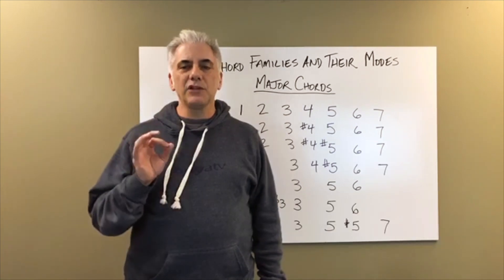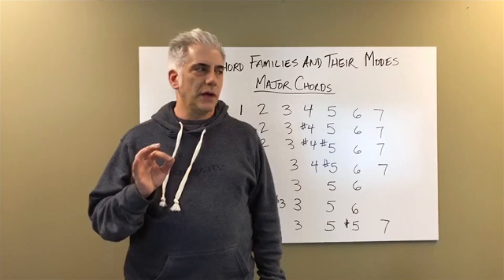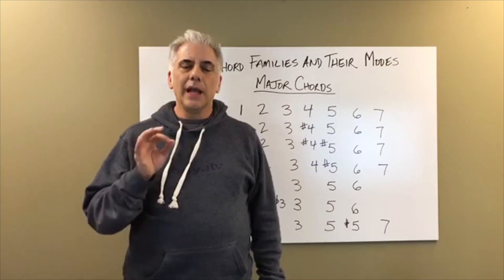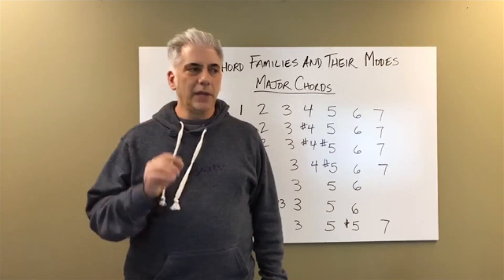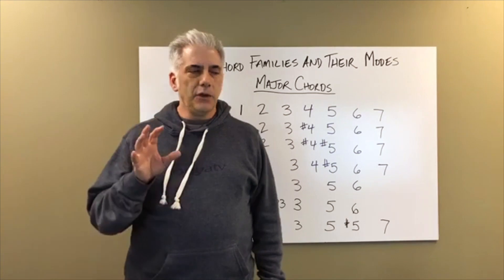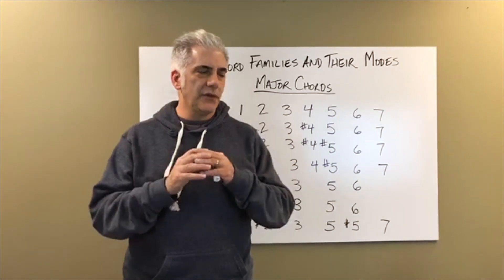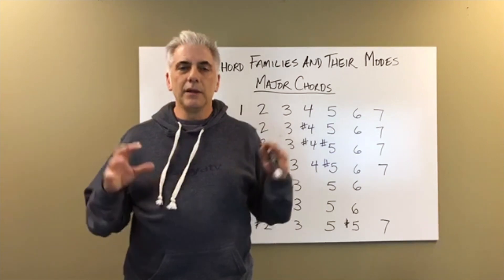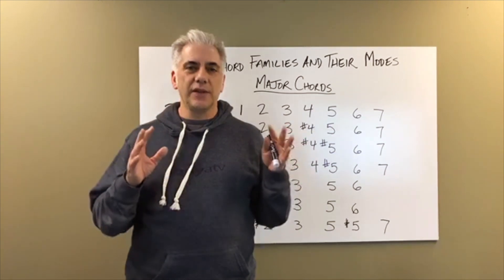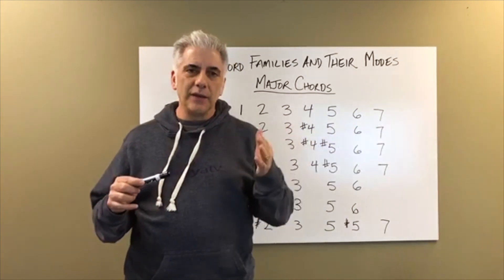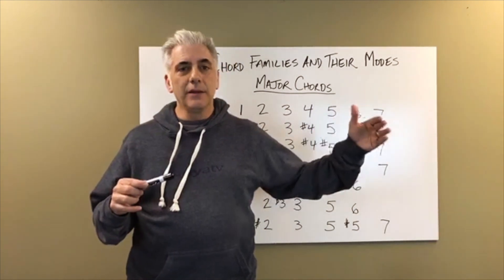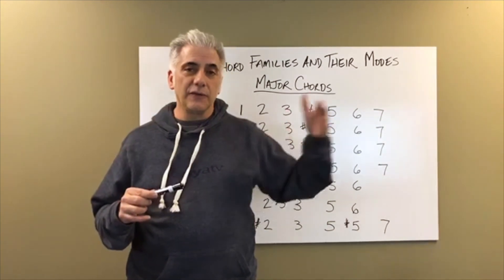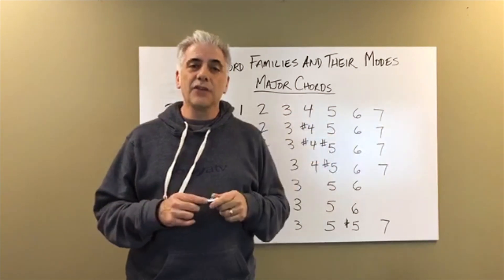I touch upon it during each video, but this is really going to get down to real specifics on what gives a mode its sound and how do you use them in improvising and composing. I use the term mode and scale interchangeably. A mode is a subset of a scale. If you take a C major scale — C, D, E, F, G, A, B, C — and then you start on D using those same notes, that's D Dorian. If you start on E, it's E Phrygian. If you start on F, it's F Lydian. That's how modes work.